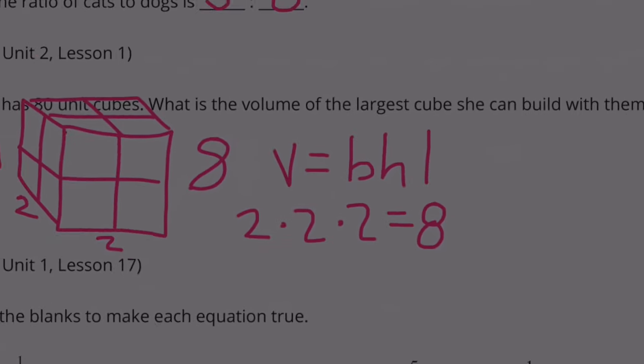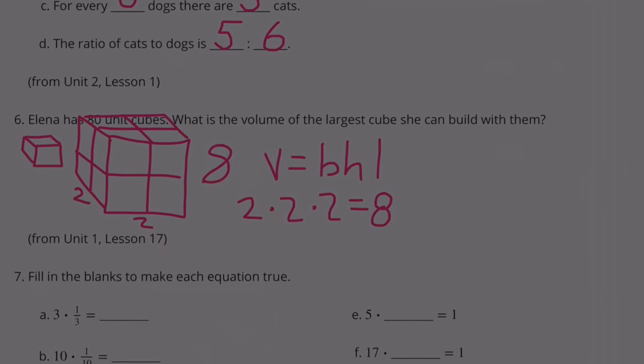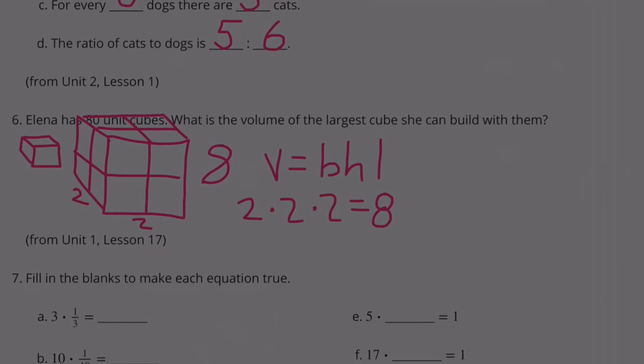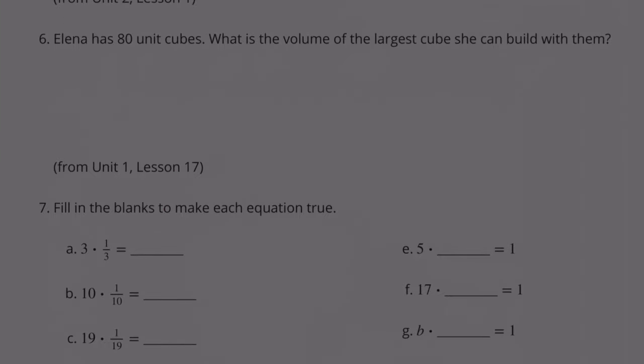But they're asking us to find the largest cube possible using 80 cubes. This example only used eight cubes. So let's come up with a scenario where we have a base, a height, and a length, and they're all the same. Let's test this one out: five times five times five. Now that's going to be more than 80. Five times five is 25, so that's 125. Having side lengths on each face of five would be too much, would be too big.